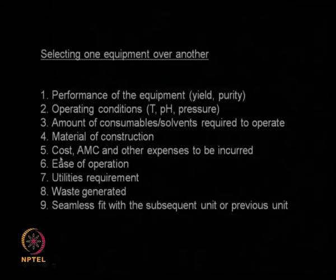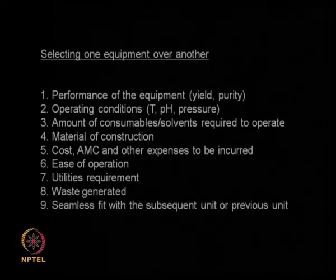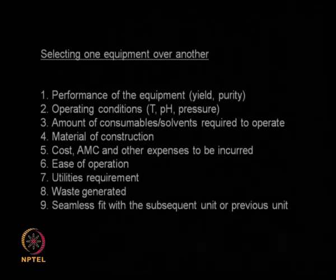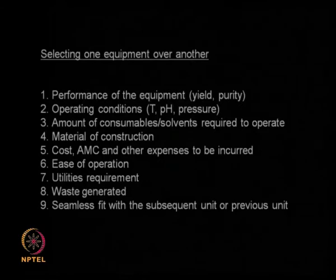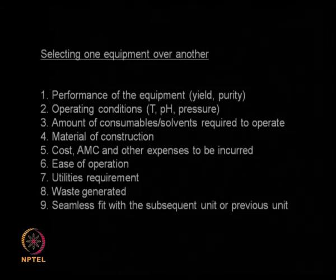For example, if you buy a BMW you will spend a lot of money on maintenance — that is a continuous expense. If you have a Maruti 800, the maintenance cost is very little. So not only the original cost of the BMW, but maintaining it also requires a lot of spending. You need to keep that in mind. Ease of operation is also important: how easy is it to operate, and do I need very complicated instrumentation and control?